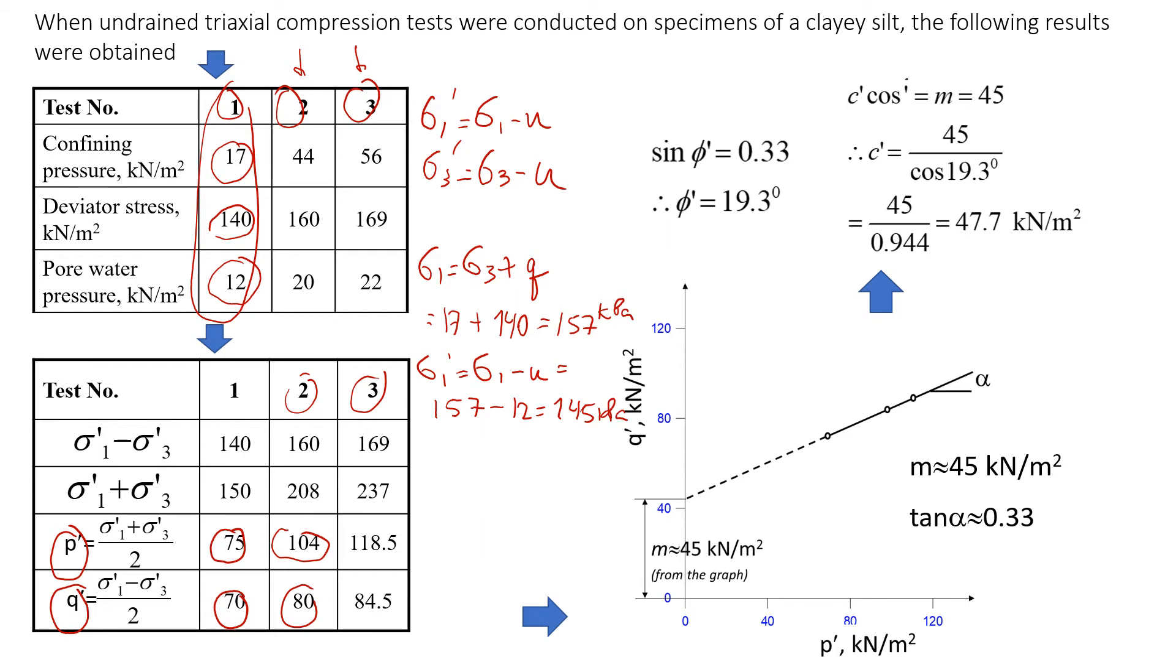Then let's do the same thing for the confining pressure or sigma 3. It's sigma 3 minus pore water pressure. For the first test the confining pressure was 17 minus pore water pressure 12. It will be 5 kPa.